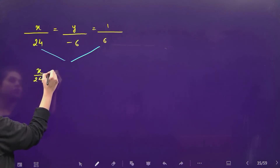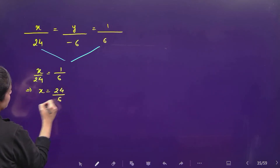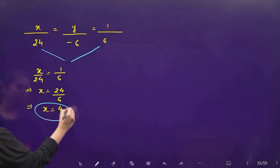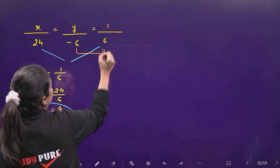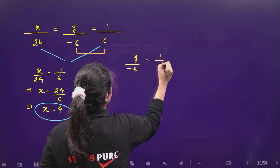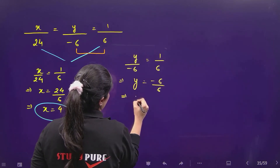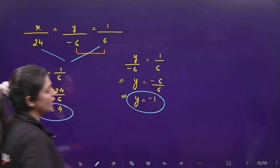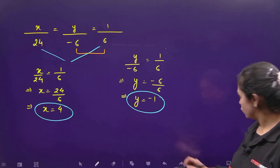So x over 24 equals 1 over 6, therefore x is equal to 24 over 6, which gives x equal to 4. Now using y and 1: y over minus 6 equals 1 over 6, so y equals minus 6 over 6, therefore y is equal to minus 1. We have found the values of x and y by the cross multiplication method.